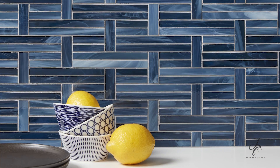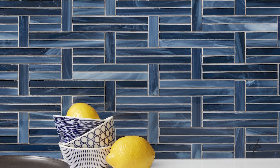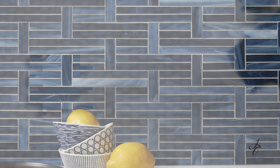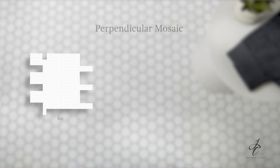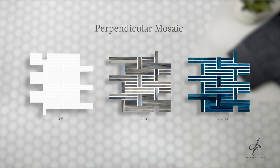The Perpendicular mosaic features a basket pattern that interweaves each glass piece into the other, hence the name. It's available in three colorways: Ice, a clean white; Clay, a unique blend of beige, cream, and blue hues; and Cobalt, a rich blue shade with slight variation.